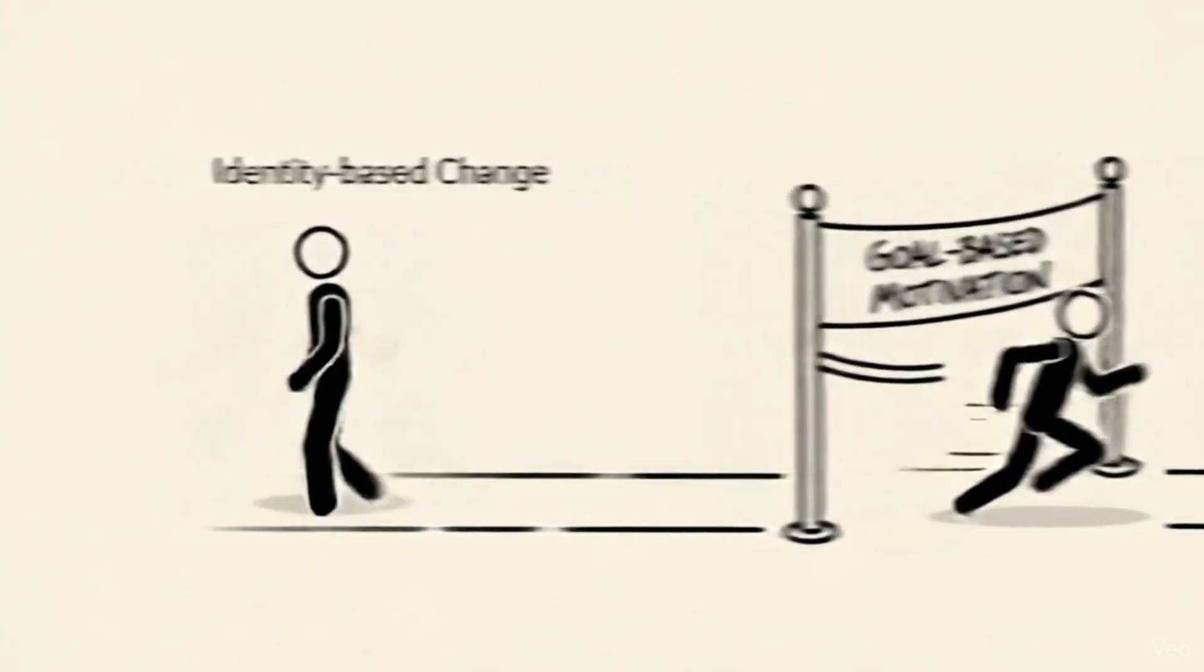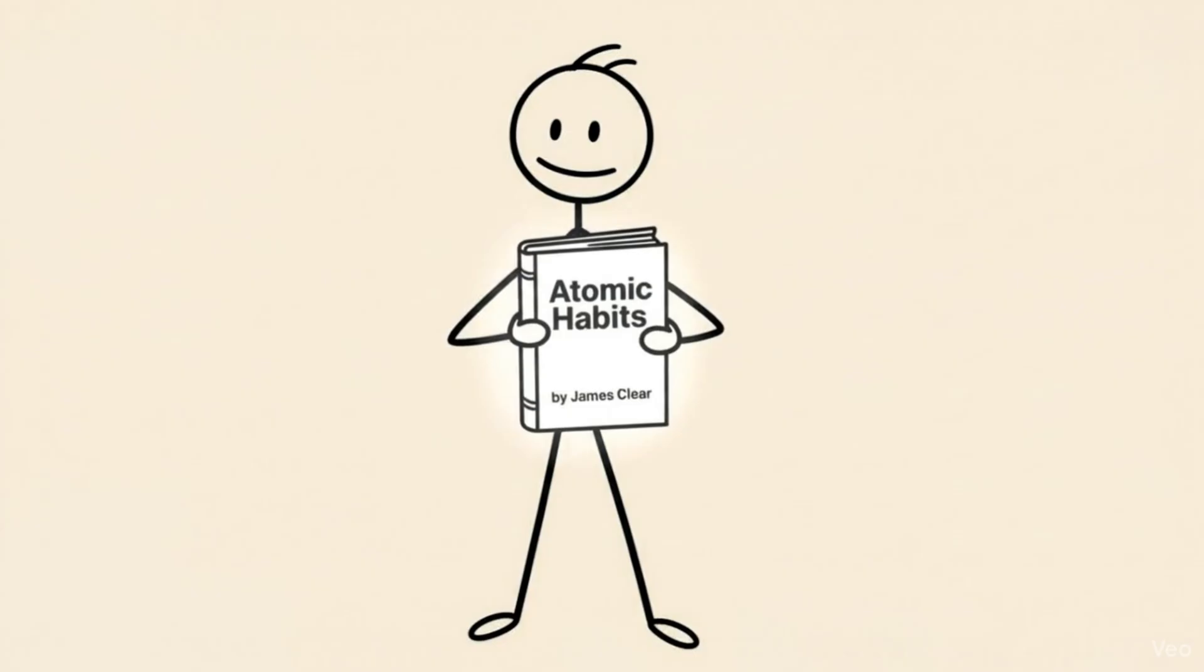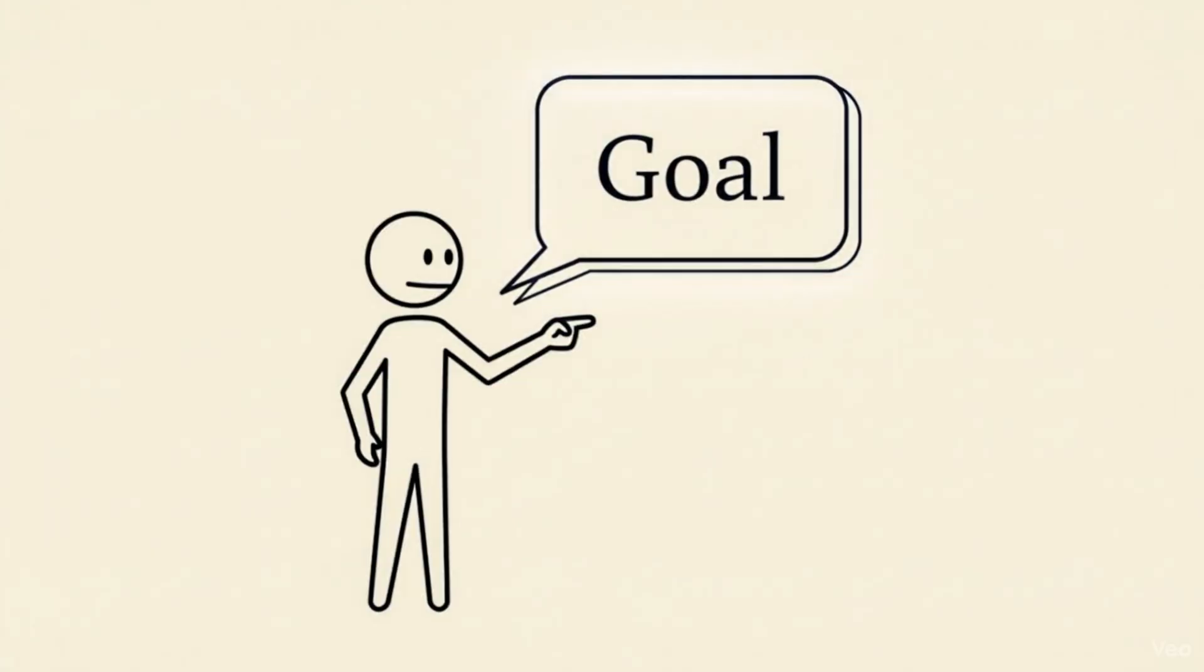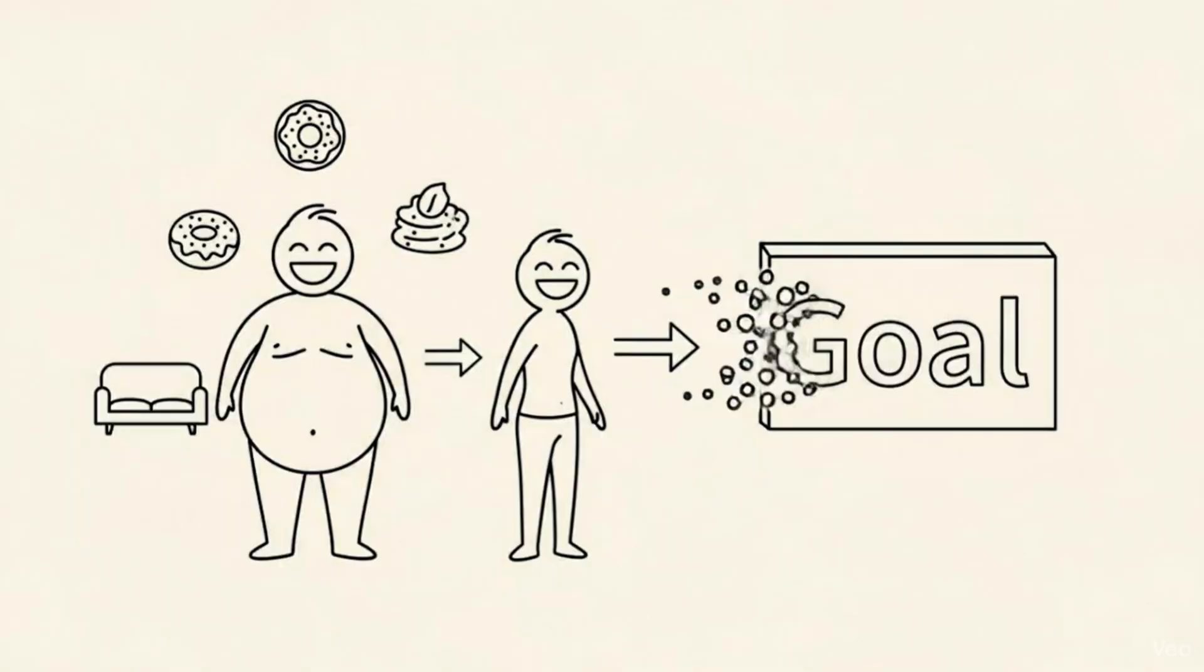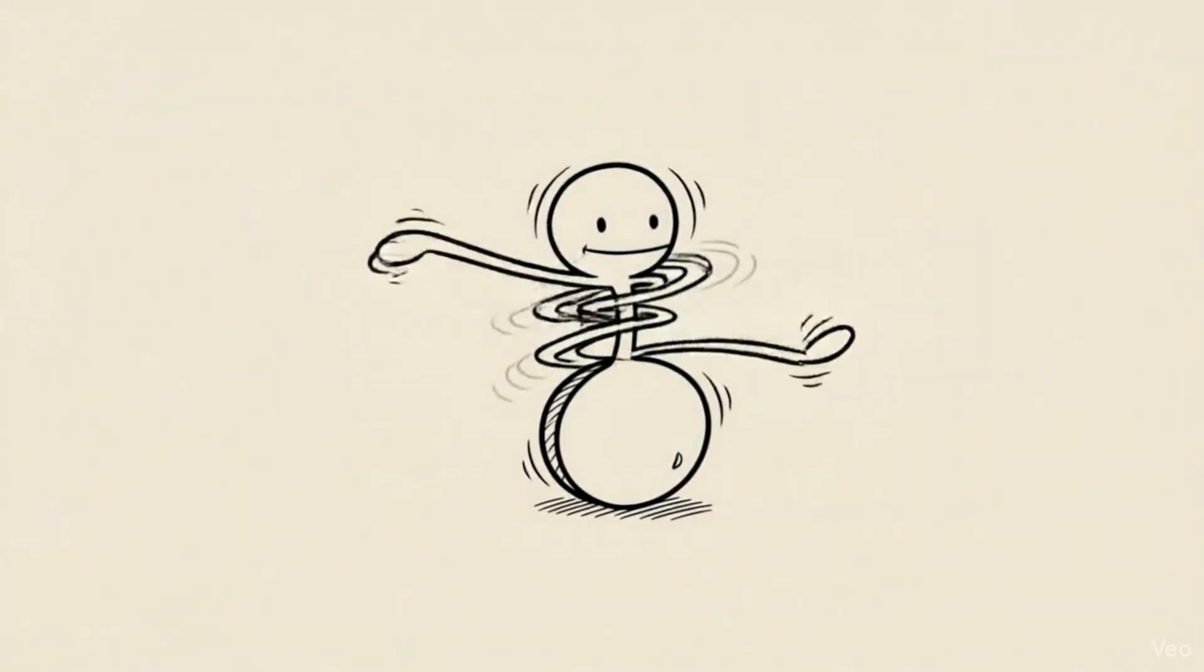It is because you are relying on goal-based motivation instead of identity-based change. This is a concept popularized by James Clear in the book Atomic Habits. Most people say, I want to lose 20 pounds. That is a goal. It is temporary. Once you lose the 20 pounds, the goal is gone, and usually the habits go with it. That is why you yo-yo diet.